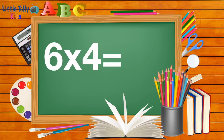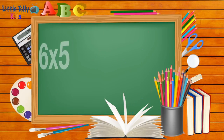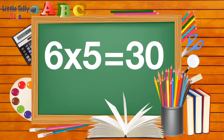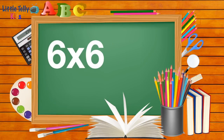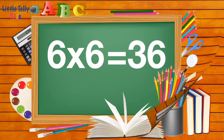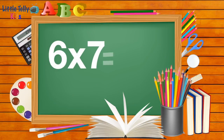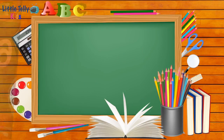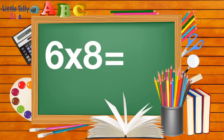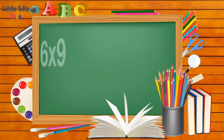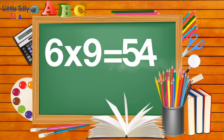Table of 6. 6 fours are 24. 6 fives are 30. 6 sixes are 36. 6 sevens are 42. 6 eights are 48. 6 nines are 54.